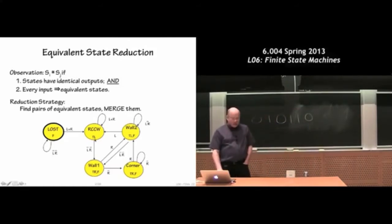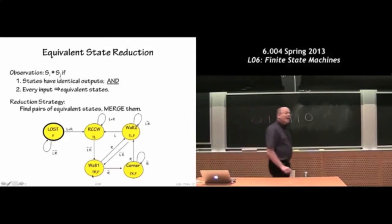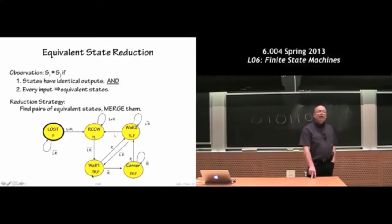Well, let's see. That one's only F. There's no other state that's only F. This one's TL. There's no other state that's only TL. This one's TLF. There's no other state that's both turning left and going forward. But these two states down here, turn right and move forward, these are two states in which the state machine is producing the same output. So those two states are potentially equivalent.